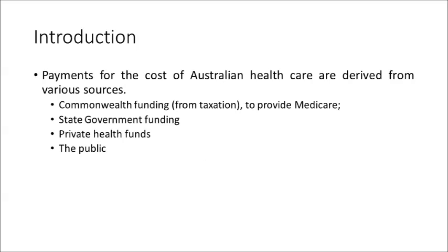Payments for the cost of Australian healthcare are derived from various sources. These include Commonwealth funding, which we contribute to through our taxes, to provide us the Medicare system. There's also state government funding, and you can also access some funding from private health funds, and sometimes the public also contribute. There are current and ongoing demands predicted to stretch the healthcare budget to the limit.